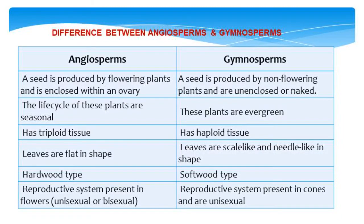This slide shows the difference between angiosperms and gymnosperms. In angiosperms, a seed is produced by flowering plants and is enclosed within an ovary. The life cycle of these plants is seasonal, they have triploid tissues, leaves are flat in shape, are hardwood type, and the reproductive system is present in flowers — unisexual or bisexual. In gymnosperms, a seed is produced by non-flowering plants and is naked. These plants are evergreen, have haploid tissue, leaves are scale-like and needle-like in shape, are softwood type, and the reproductive system is present in cones — and are unisexual.